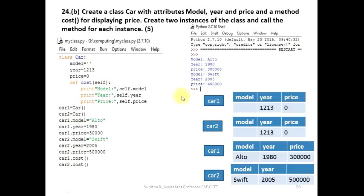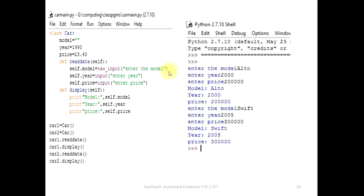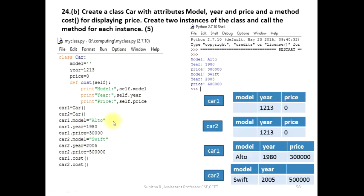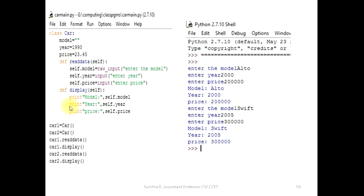Car1.model is assigned. Enter the model, then enter the year, then enter the price. Car1.model is now stored. The function will display the model, year, price using the display method. That is displayed. That is displayed for the second object as well.